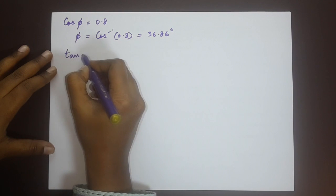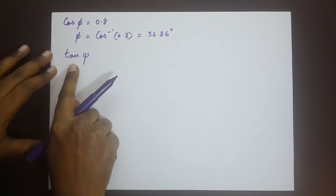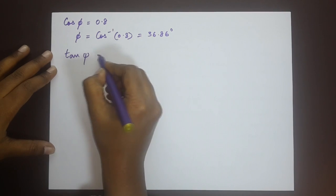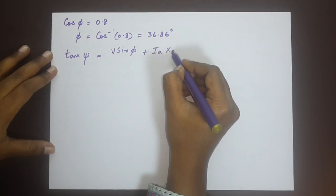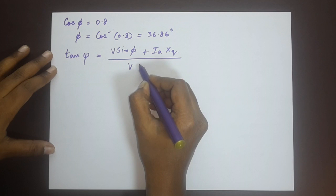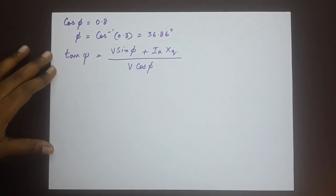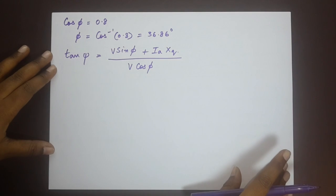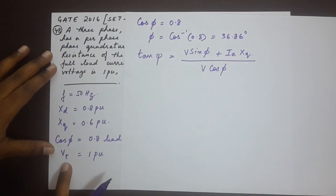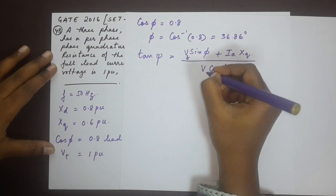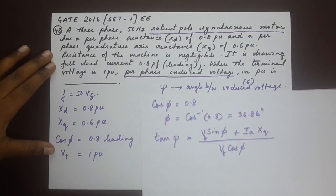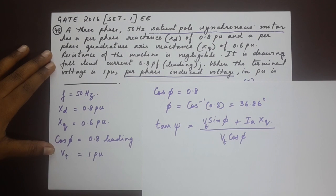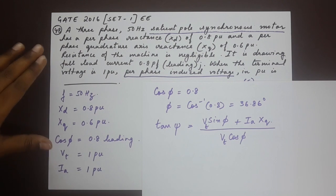Now, the next step is to find out what psi is and to do that we can use the standard formula of tan psi. Tan psi is equal to V sin phi plus Ia·Xq divided by V cos phi.